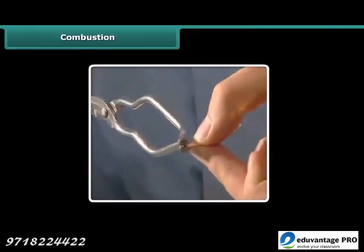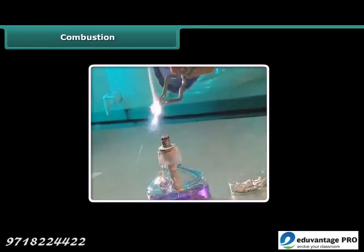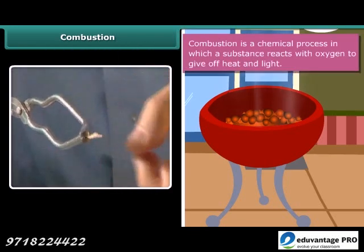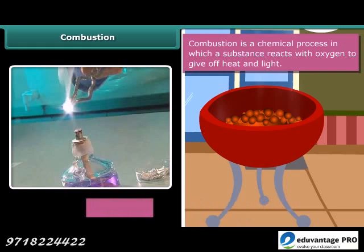Rohan is performing a simple activity. He is burning a magnesium wire on a flame. Notice carefully — heat and light is also produced along with magnesium oxide. Now look at the burning of coal. This burns in air producing carbon dioxide, heat and light. In both examples, the substances are reacting with the oxygen of the air to produce heat and light. This process is called combustion.